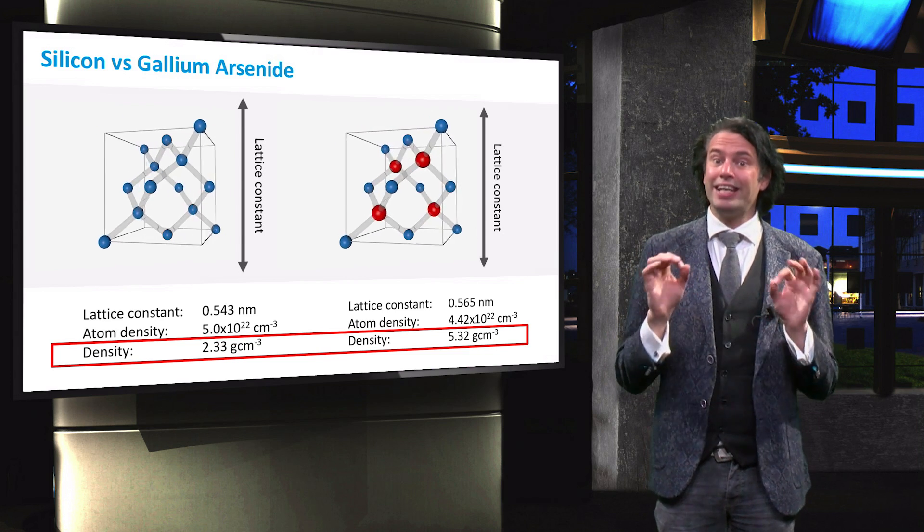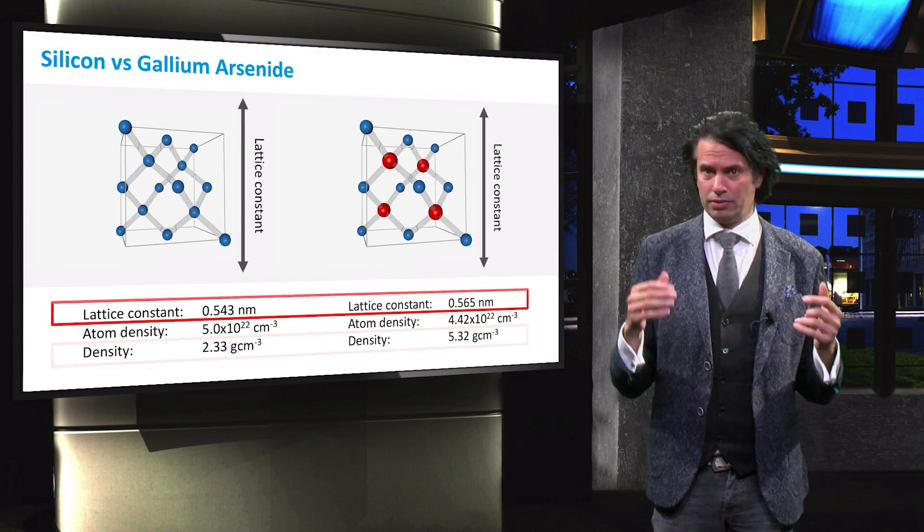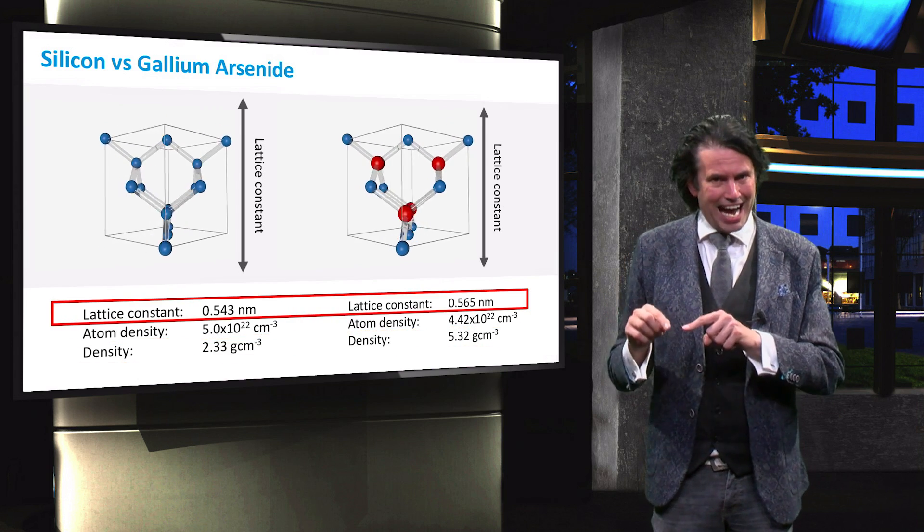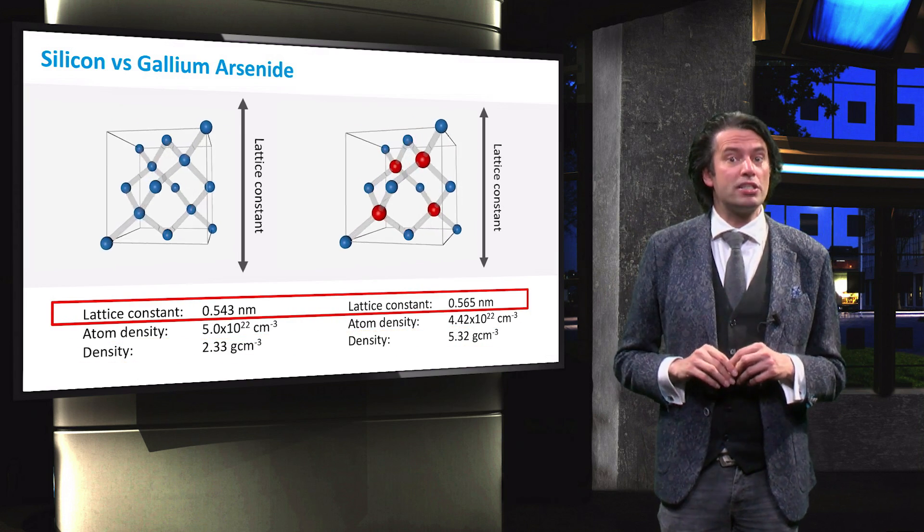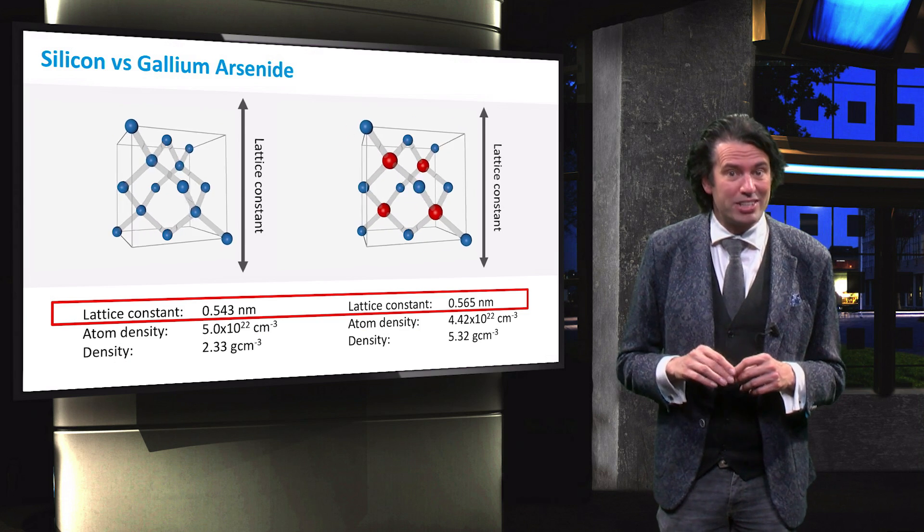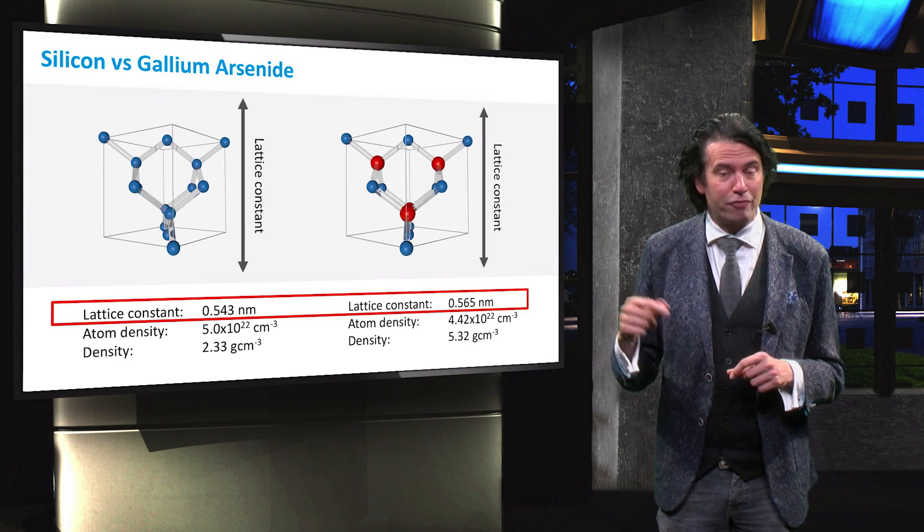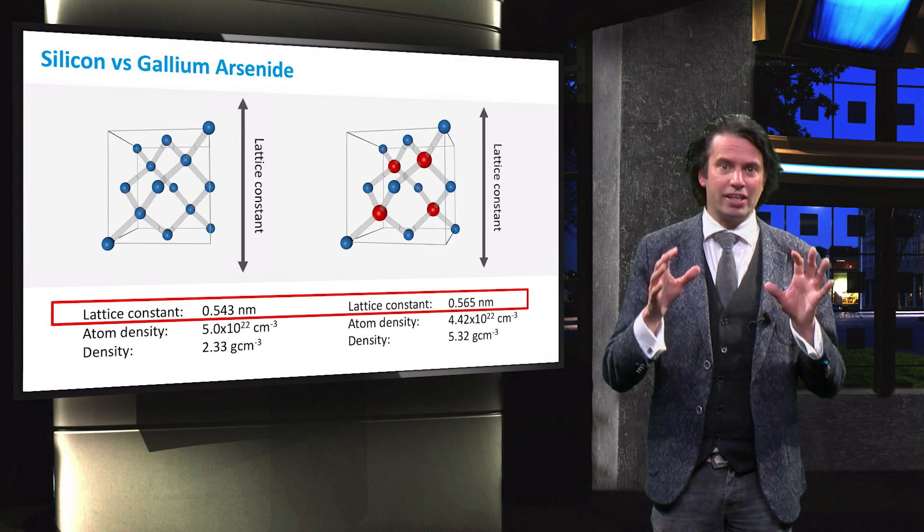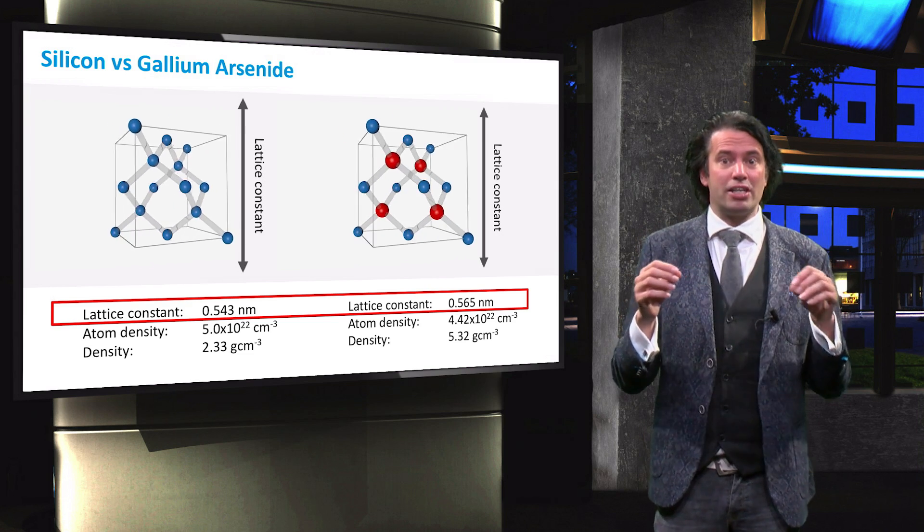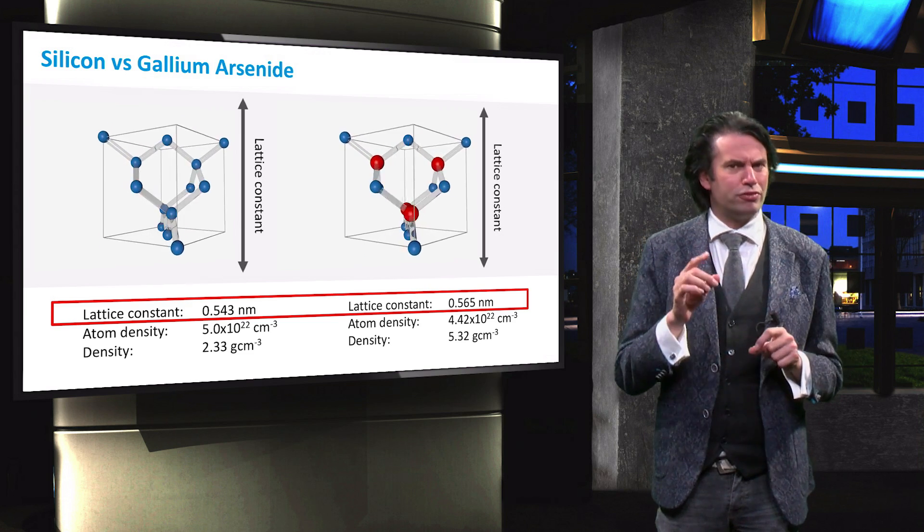In addition, the lattice constant is different. The lattice constant denotes the edge length of a cubic cell and is around 20 picometers greater in gallium arsenide in reference to silicon. Interestingly, the lattice constant of gallium arsenide is very close to that of germanium.